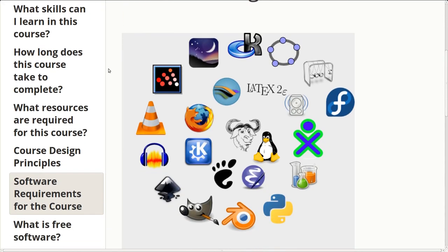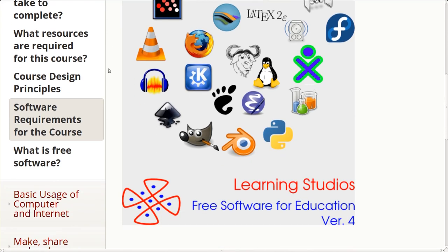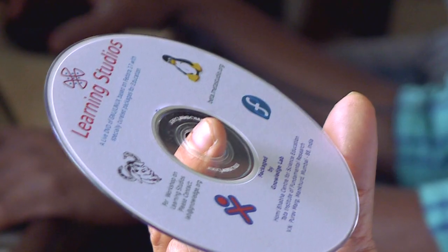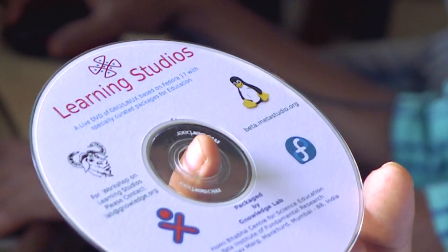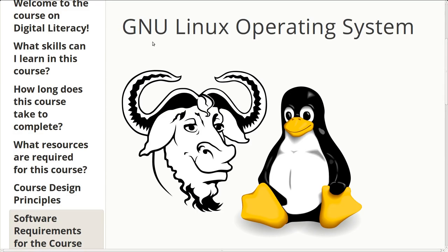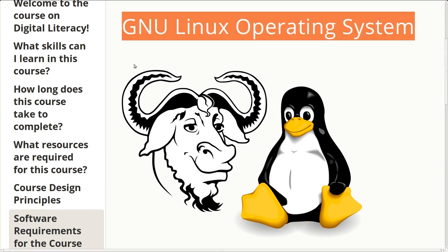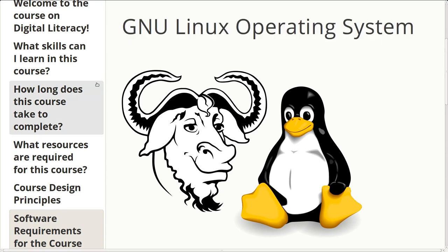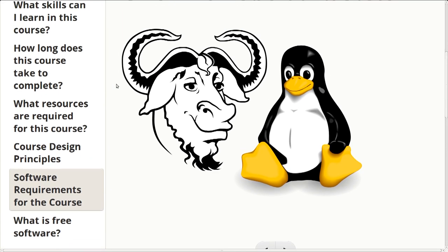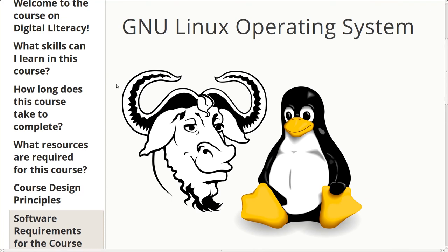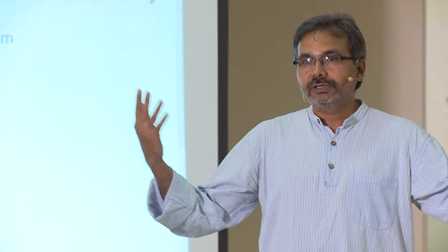Usually, Knowledge Lab makes a DVD which is good enough, starting from primary school to the graduate level. In place of that DVD, what we have done is we have customized it just for the digital literacy course. And the operating system that we are using for this course should be the GNU Linux operating system. Linux is the kernel, which is the most popular one, and GNU is the entire tool chain that powers the operating system.